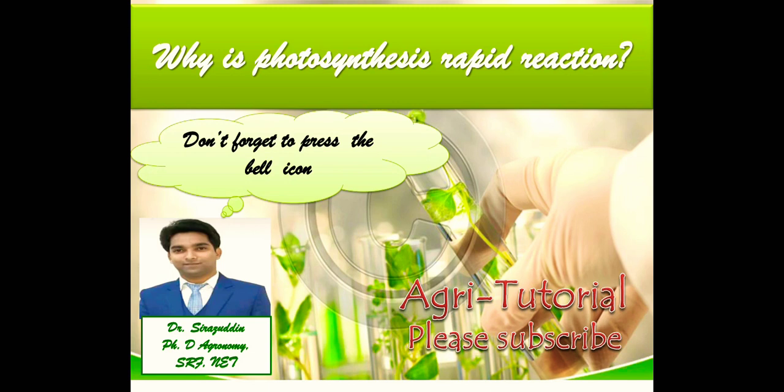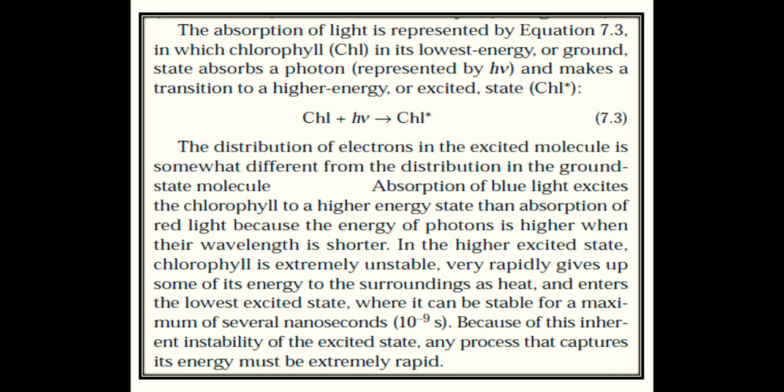Before giving you the exact answer, we need to understand some concepts. First, whenever there is absorption of light, chlorophyll is the molecule which absorbs light in its lowest energy or ground state. After absorption of a photon, it moves to the higher energy level — the excited state. As shown in equation 7.3, chlorophyll after absorbing h-nu (the photon) gets into the excited state, denoted as chlorophyll star. The electron distribution in the excited molecule is somewhat different from that in the ground state.